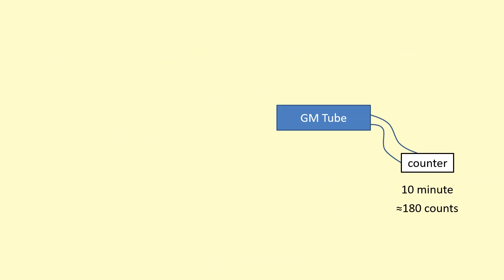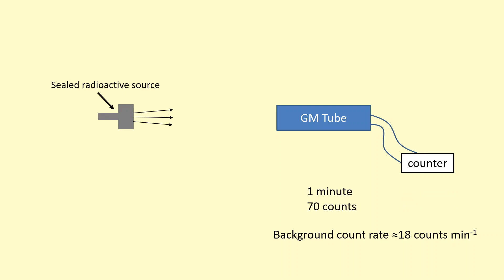Let's say I measure the background radiation for 10 minutes and I get 180 counts. That gives me a background count rate of 18 counts per minute. Now I'm ready to bring the sample back into the room. Let's say I measure that for around a minute and I got 70 counts.